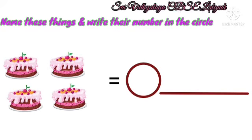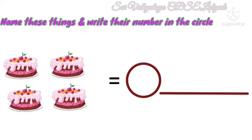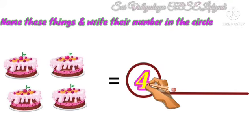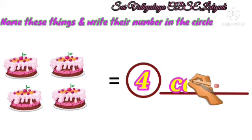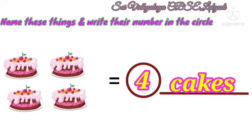Next example. Here you can see some cakes. How many cakes are there? 4. Yes, so write 4 in the circle. And write cakes in the given space.